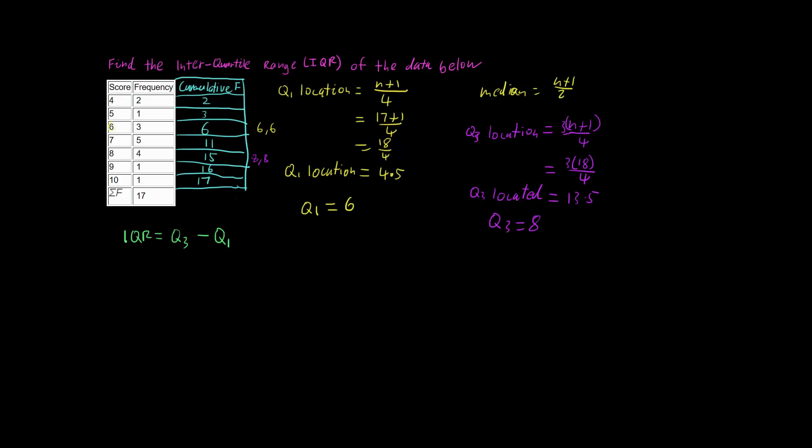So now we can go down to my IQR, and I have my Q3, which I had was 8, and I'm going to subtract off my Q1, which I worked out was 6. So this is going to give me an IQR of 2.